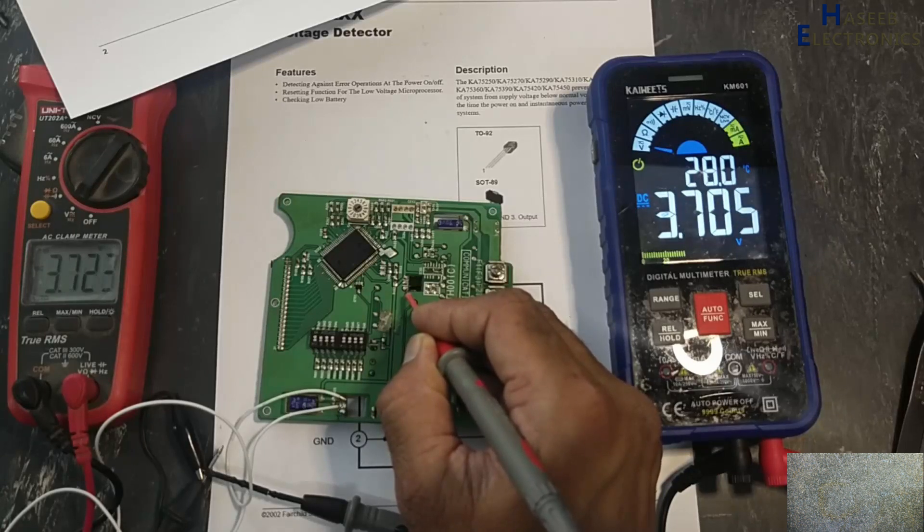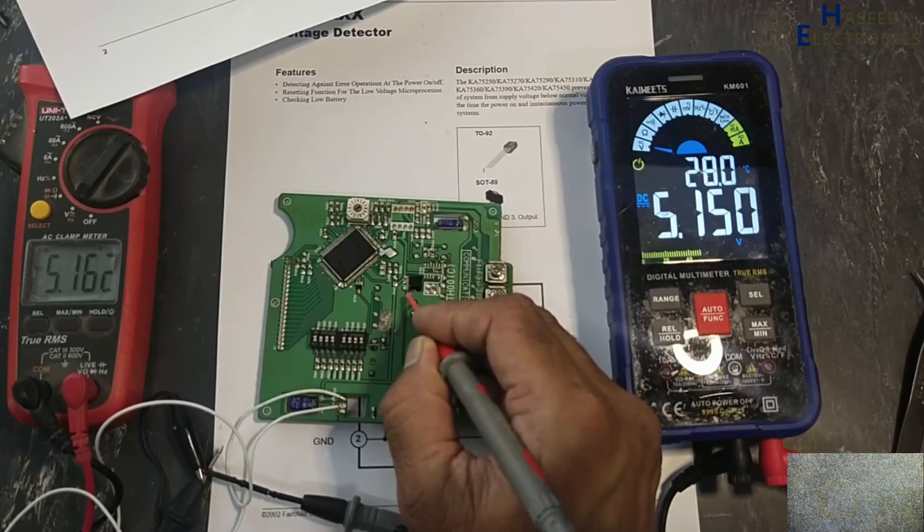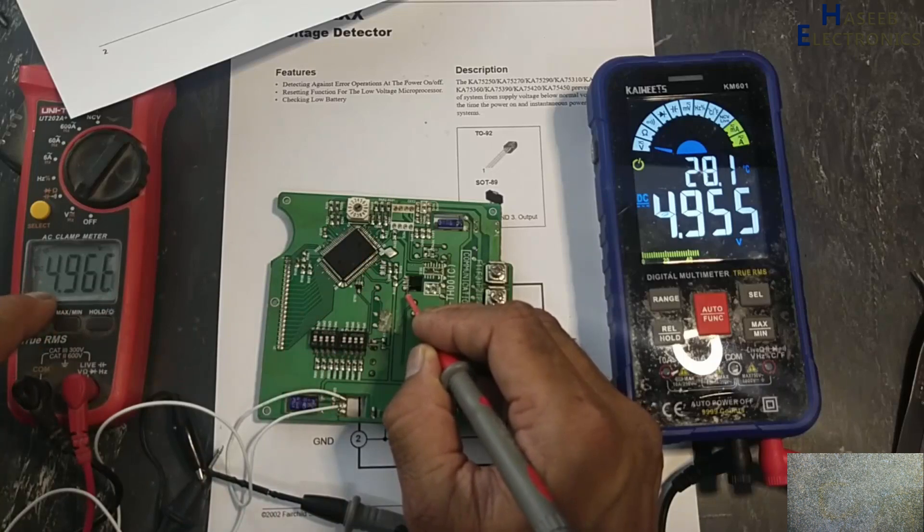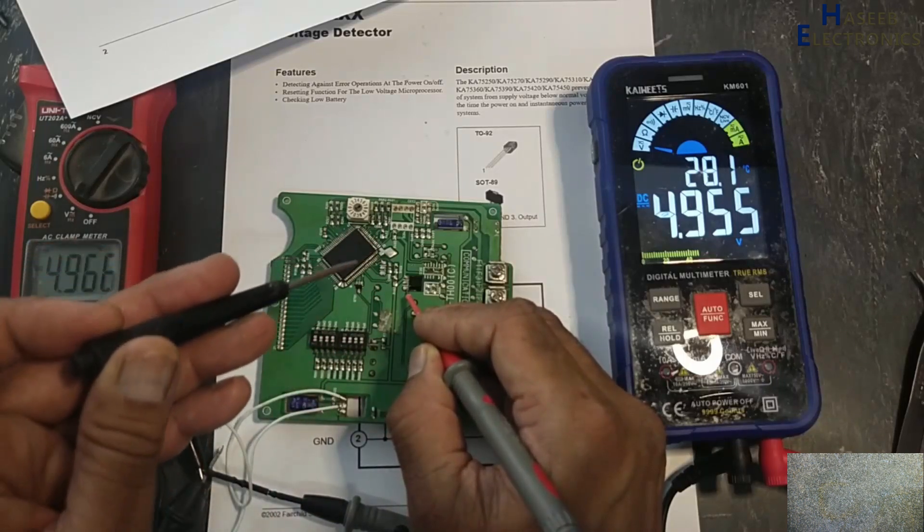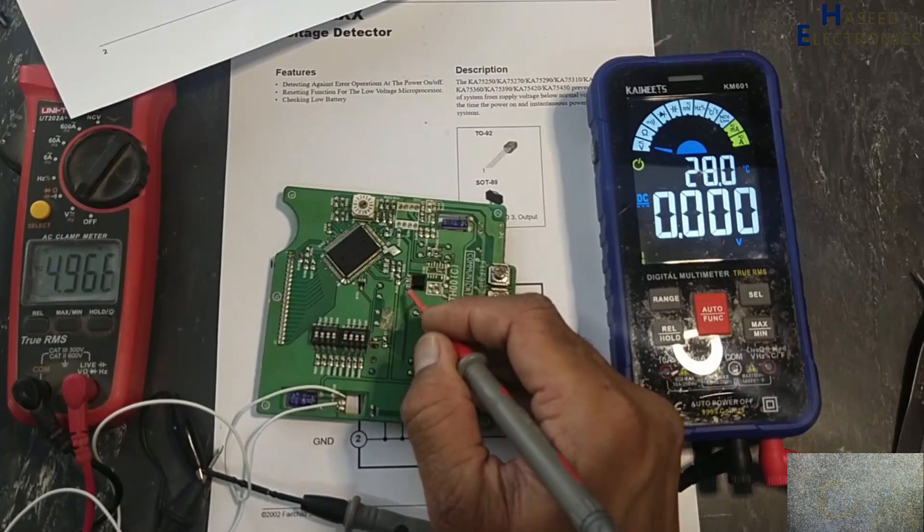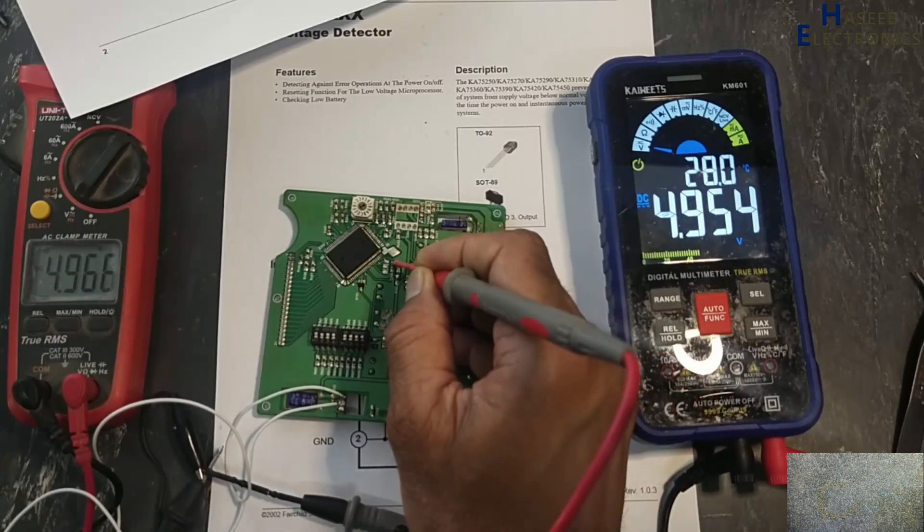If the voltage are above than 3.3 volt, we can say... if the voltage are above than 3.3 volt at input, at this point, then the VCC voltage will reach at the output and reset pin will obtain the same voltage.